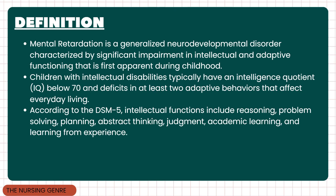First of all, the definition. Mental retardation is a generalized neurodevelopmental disorder characterized by significant impairment in intellectual and adaptive functioning that is first apparent during childhood. Children with intellectual disabilities typically have an intellectual quotient below 70, and deficits in at least two adaptive behaviors that affect everyday living.